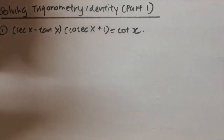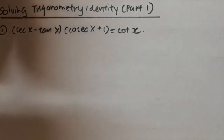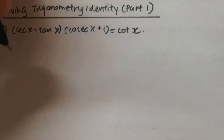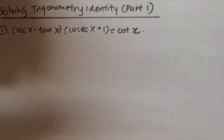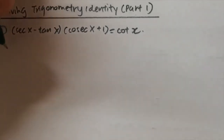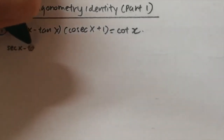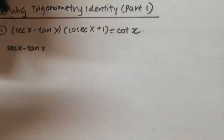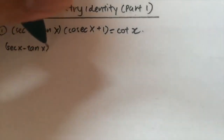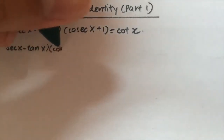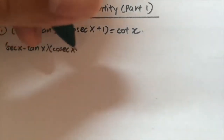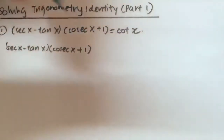Usually when we prove identities, we go from the most complicated part to the very simple ones. So in order to solve this question, we start with (sec x minus tan x)(cos x plus 1).